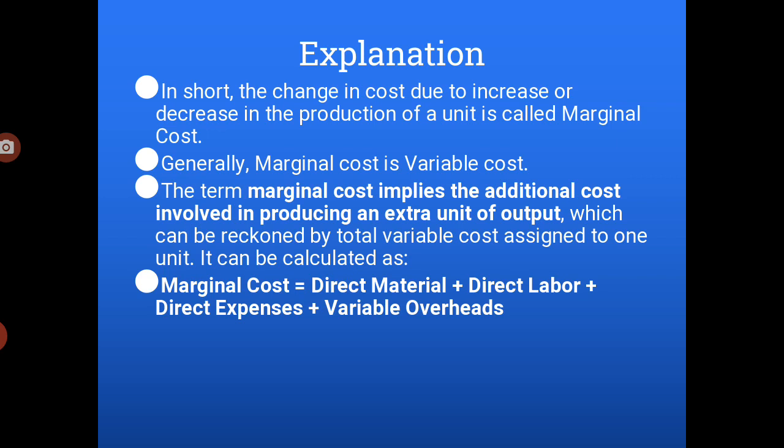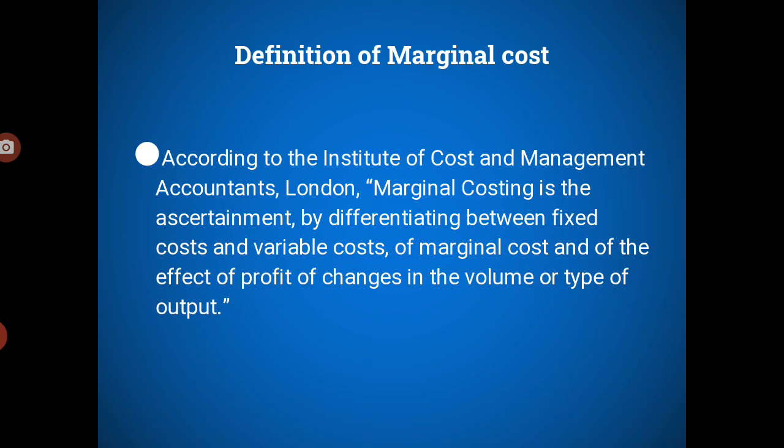Look at the last point. Marginal cost is: direct material plus direct labor plus direct expense and variable overheads. By adding all these things you get the marginal cost. This is one more definition of marginal costing: marginal cost is the ascertainment by differentiating between fixed cost and variable cost, and of the effect on profit of change in the volume or type of output.